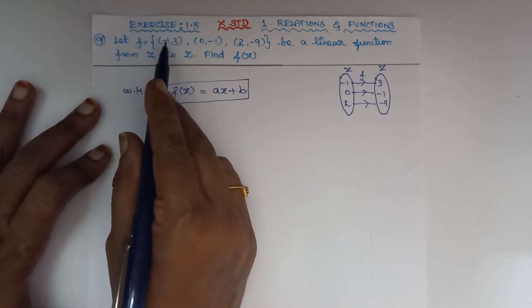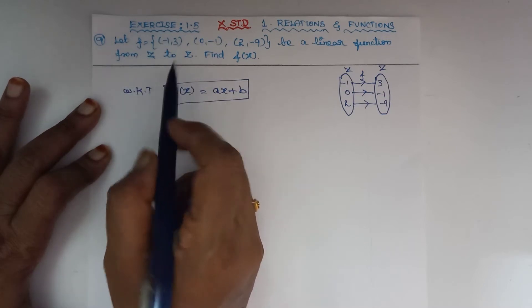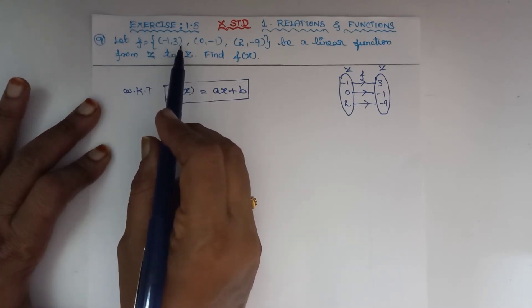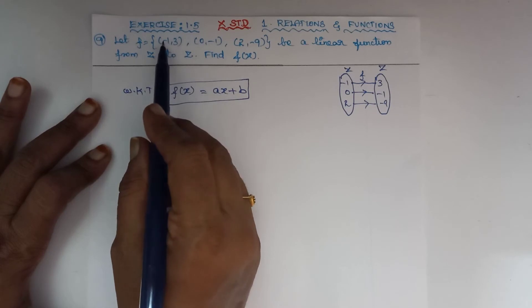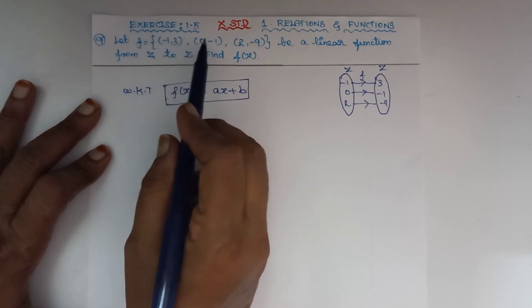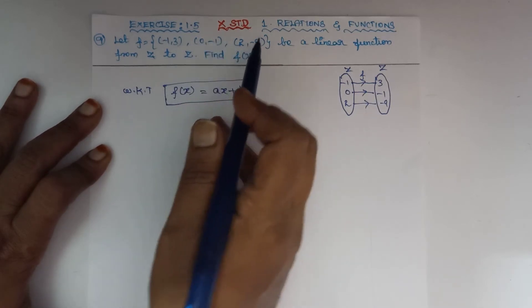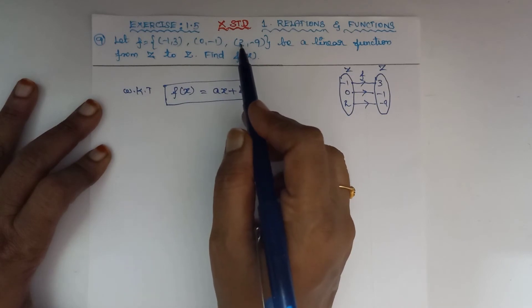When x = -1, f(-1) = 3, which is the range. When x = 0, the domain element f(0) gives range -1. When x = 2, f(2) gives image -9.